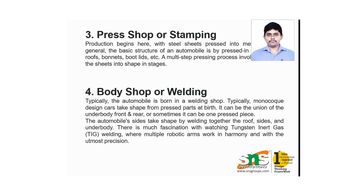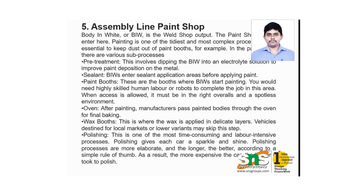When joining different kinds of metals or alloys, we use the body shop building process. It is used for the roof sides and underbody. A notable technique is Tungsten Inert Gas (TIG) welding, used for manufacturing components, where multiple robotic arms work in harmony with utmost precision to give shape to the car body.